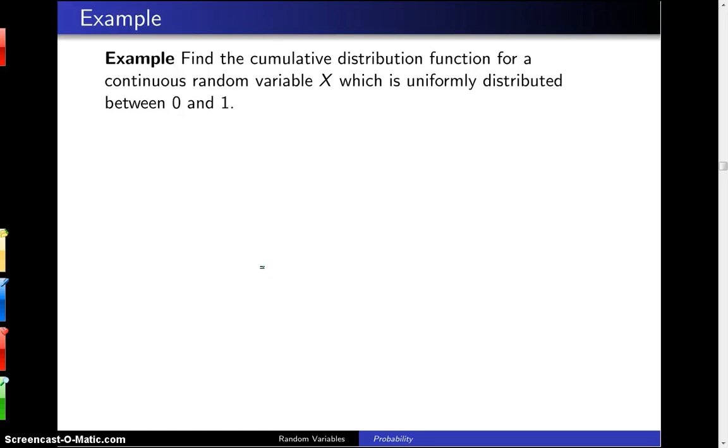Find the cumulative distribution function for a continuous random variable x which is uniformly distributed between 0 and 1. So we begin the problem by writing down the probability density function for the random variable x. We know that its support will be between 0 and 1.